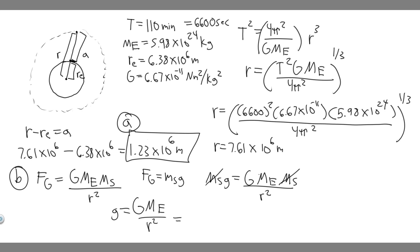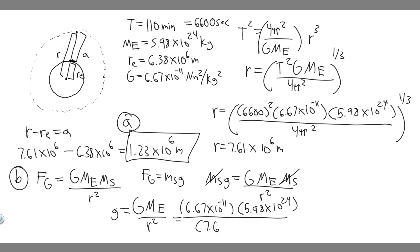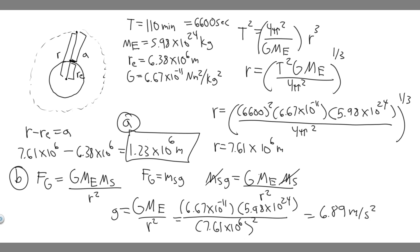We know all these numbers, so we just plug them in. g = 6.67 × 10⁻¹¹ multiplied by 5.98 × 10²⁴, divided by the radius squared. The radius we found was 7.61 × 10⁶ — keep in mind it's the whole radius — so (7.61 × 10⁶)². When you plug this into your calculator, you get 6.89 meters per second squared. That's the value of g at the satellite's altitude. That's your answer to Part B.